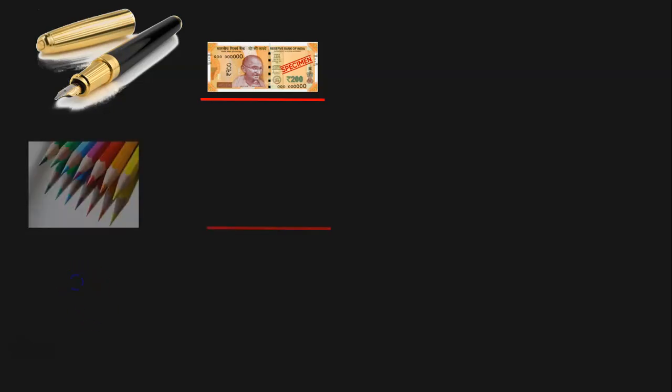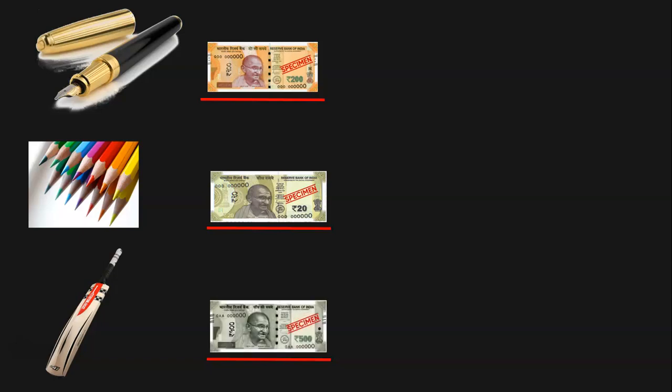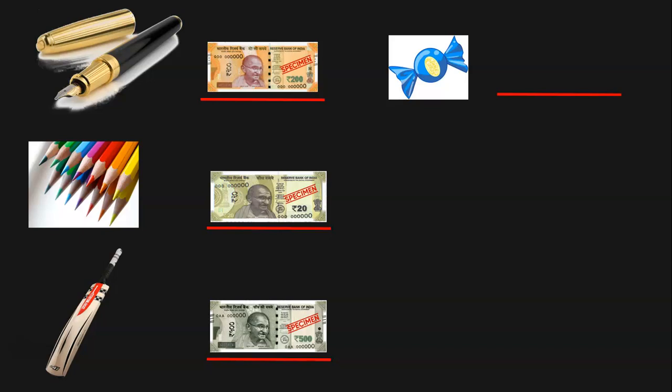Discuss with your children in the class and ask them to make a guess. The next item is a set of color pencils — how much could this be? It could be 20 rupees. This is a cricket bat; if it is going to be a professional cricket bat, how much will it be? It could be 500 rupees. Next, we have a small candy — how much could the price be? 2 rupees. It cannot be 50 rupees or 100 rupees, so this is going to be 2 rupees.